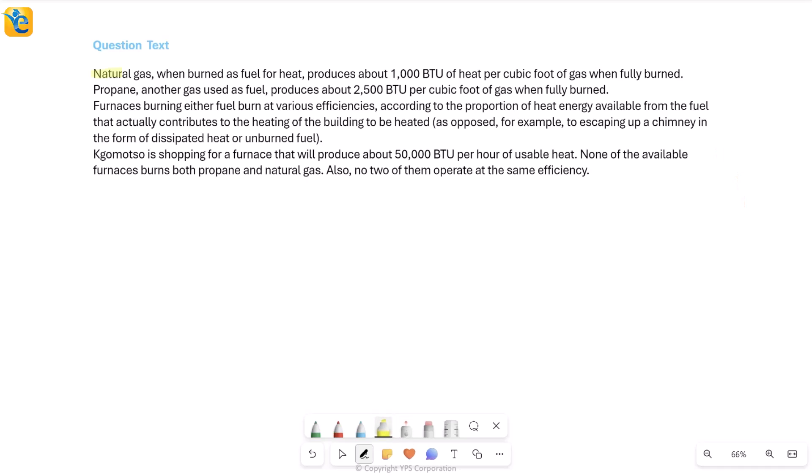First it talks about natural gas. It says that natural gas, when burned as fuel for heat, so the goal is to generate heat. When it is burned, then it produces about 1000 BTU of heat per cubic foot of gas when fully burned. So this was just talking about burned as gas, but if you fully burn it, leaving no scope, then it produces a certain quantity of heat measured in BTU. This is how much heat you will be able to generate if you completely burn one cubic foot of natural gas.